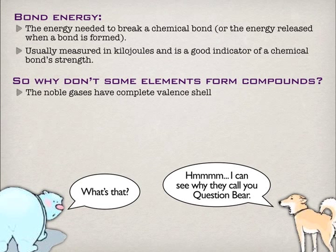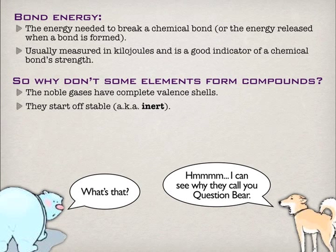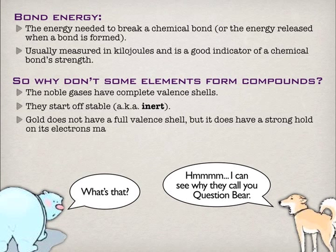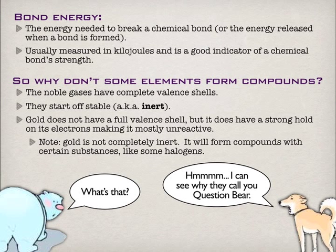Now there are elements that don't form bonds. The noble gases start with a complete valence shell — they're inert. Other elements like gold or some transition metals can be found in nature in their elemental form because they have an unusually strong hold on their valence electrons. But those can be in compounds too, more so than the noble gases.